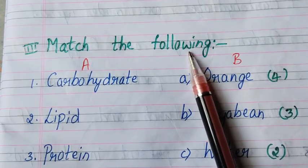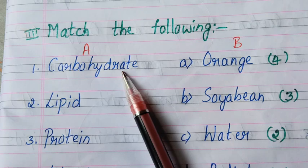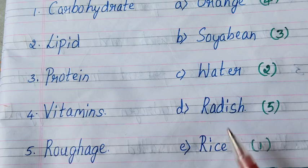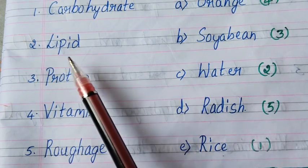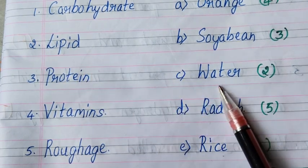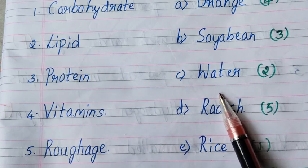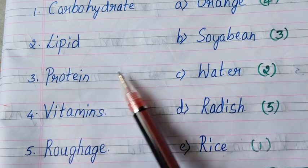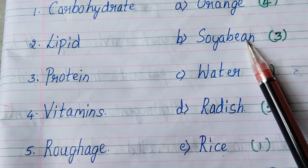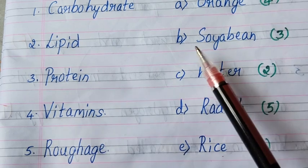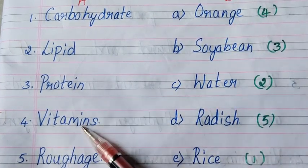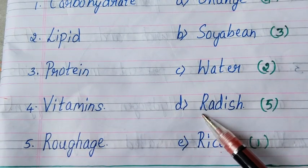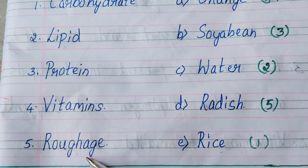Next is match the following. First one: carbohydrate — answer is rice. Second one: lipid — answer is water. Third one: protein — answer is soya bean. Fourth one: vitamins — answer is orange. Fifth one: roughage — answer is radish.